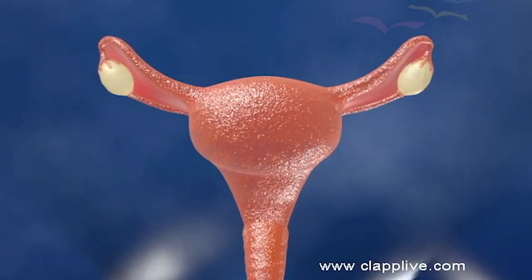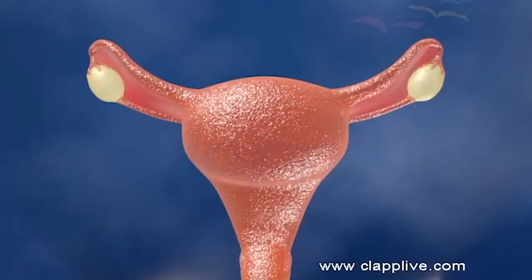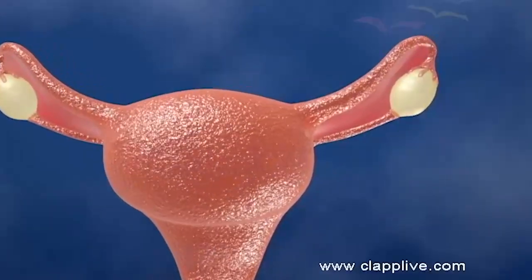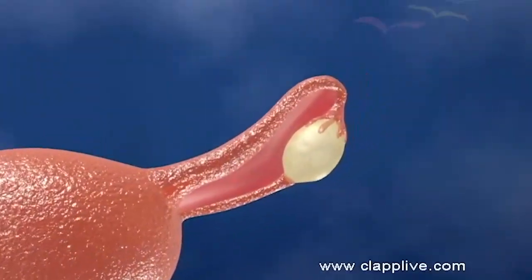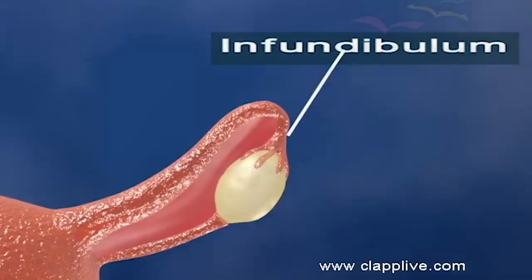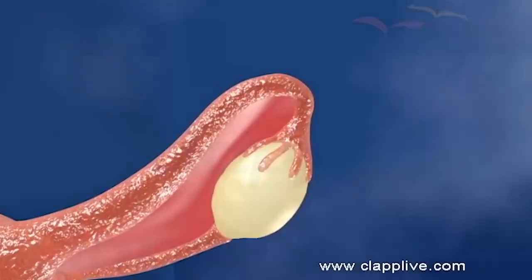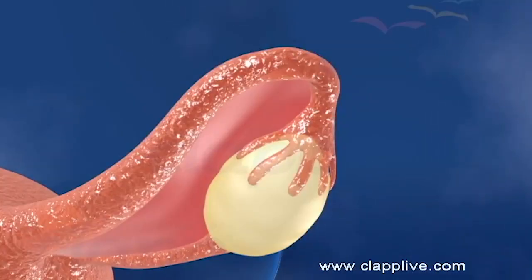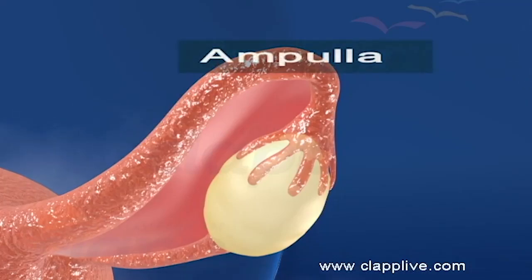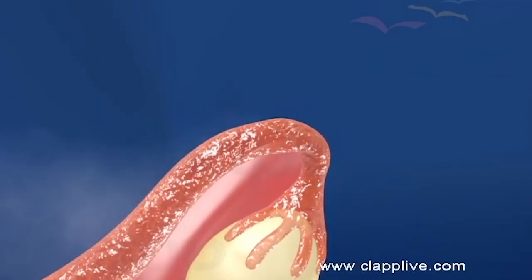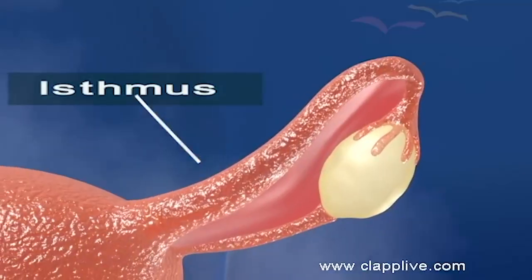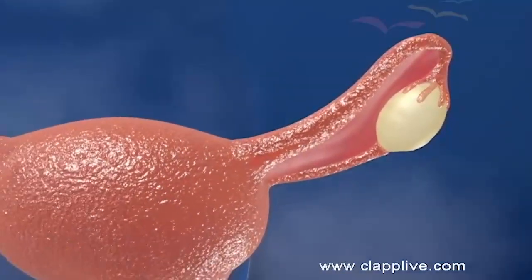Fallopian tubes or oviducts are narrow tubes, about 10 to 12 cm long, connecting the ovary to the uterus. Each oviduct is differentiated into three parts: infundibulum, ampulla, and isthmus. Infundibulum is the funnel-shaped proximal part and has finger-like projections called fimbrae at its margin. Fimbrae are very close to the ovaries and receive the egg released from the ovaries. Ampulla is the wider part of the oviduct next to infundibulum. It is lined by ciliated epithelium. Isthmus is the short, narrow, and straight part that follows the ampulla and connects with the uterus.